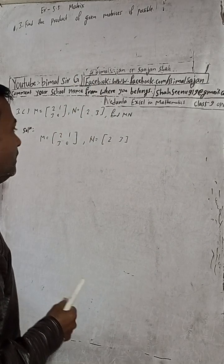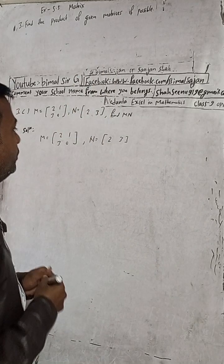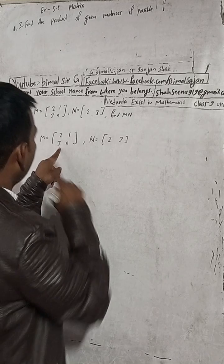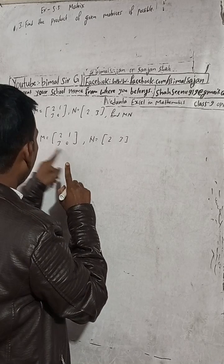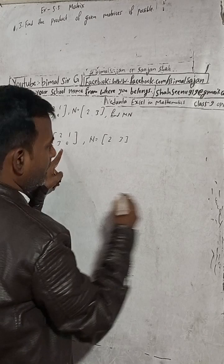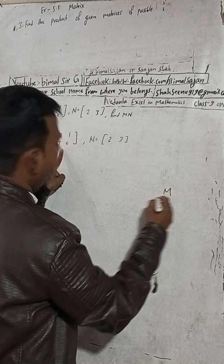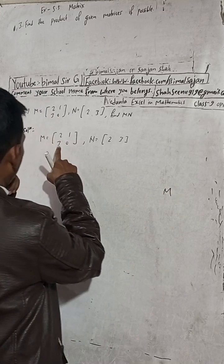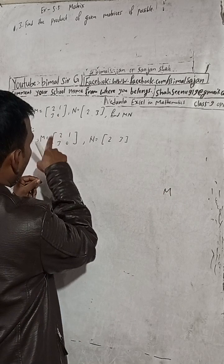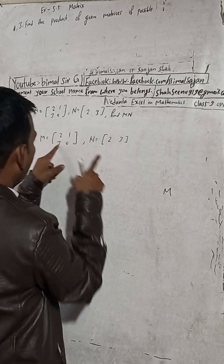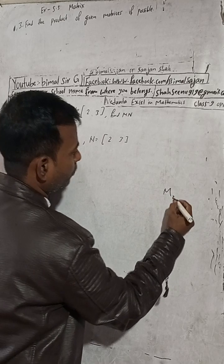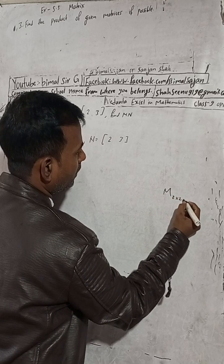So let's check whether it is possible or not. What is the order of this M matrix? The M matrix order is: 1 row, 2 rows — so 2 rows — and columns: 1, 2 columns. So M is a 2 by 2 matrix.